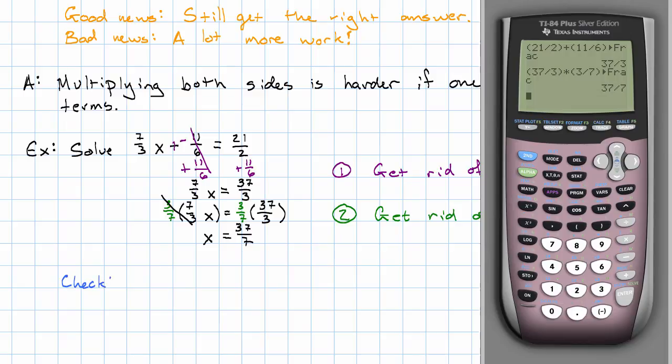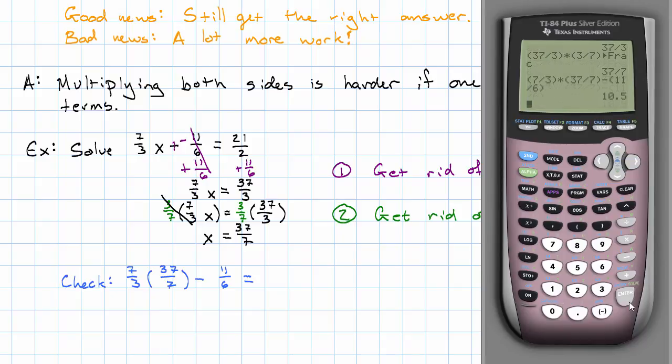And we're done. We should probably check our answer, though. If we take 7 thirds times 37 sevenths minus 11 sixths, what do we get? Well, we have 7 thirds times 37 sevenths minus 11 sixths, 10.5. That's looking promising. Make it into a fraction. It really is 21 halves. Notice, we can just go ahead and solve this equation with the fractions in it. And just use our calculator if we want to for the fraction arithmetic.